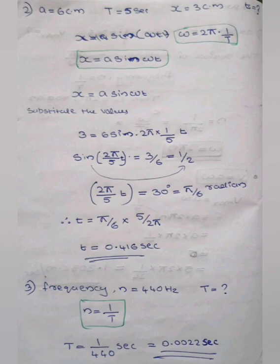A violin playing a note oscillates at 440 Hz. What is the period of oscillation? Here, the frequency n equals 440 Hz. Using n equals 1 by T, we get T equals 1 by n equals 1 by 440 seconds, which equals approximately 0.0022 seconds.